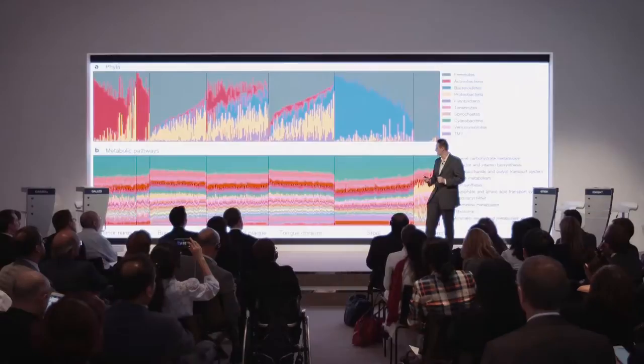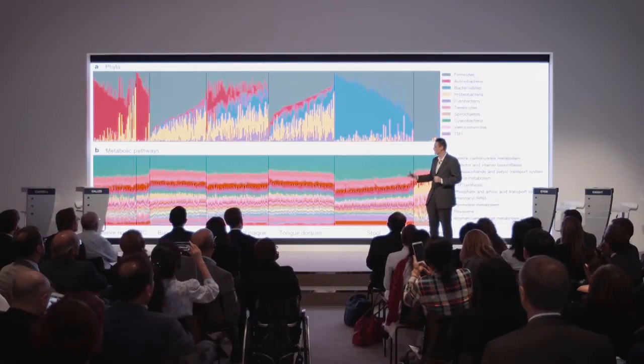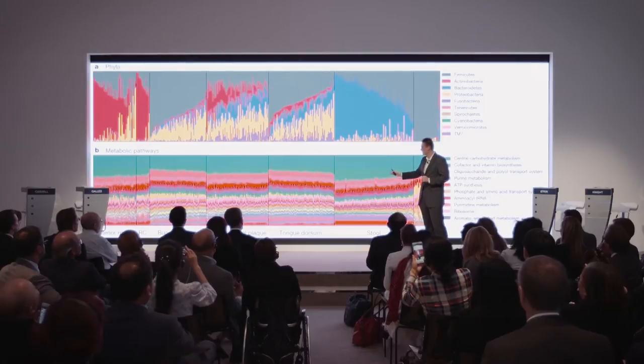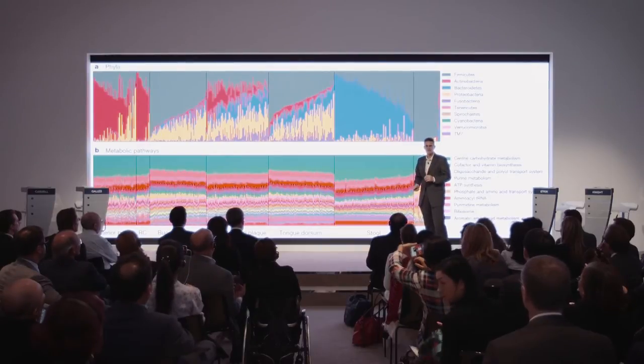But that's not at all what we found, despite the fact that they were essentially all medical students in their 20s from just two universities in the southern United States. And what we found instead was this tremendous diversity. So each vertical line on this plot represents a different person.